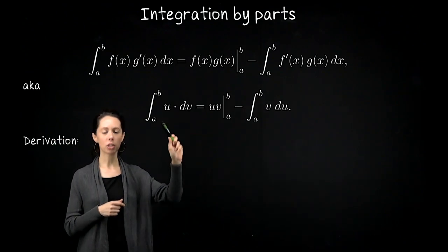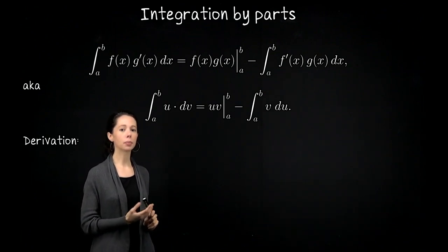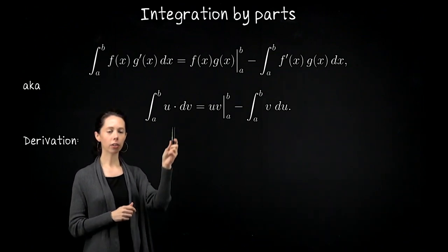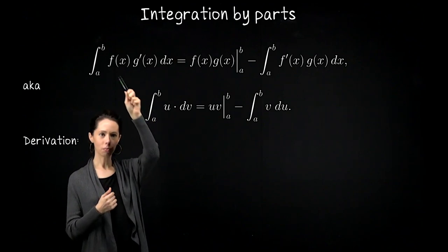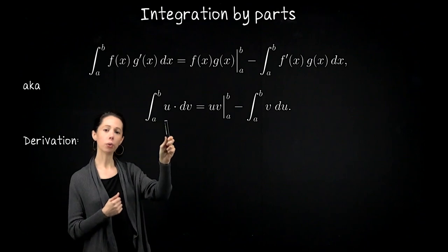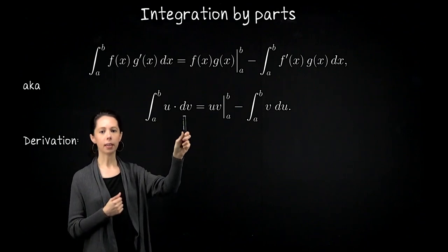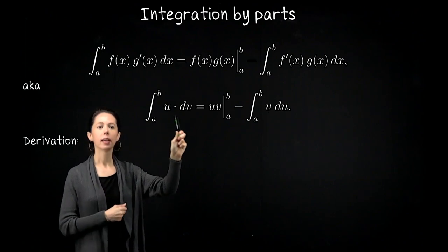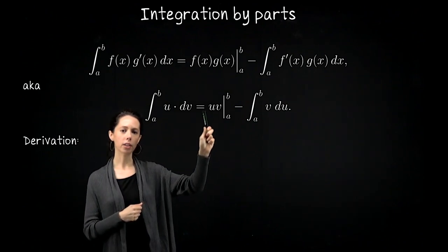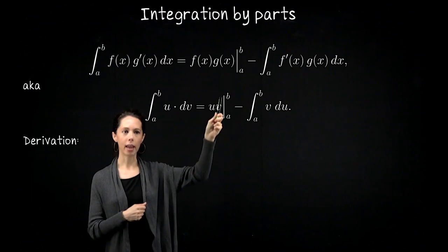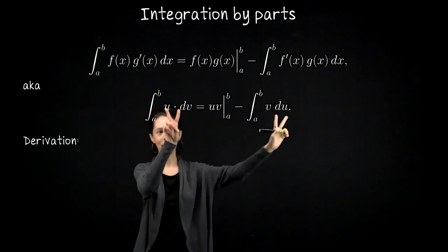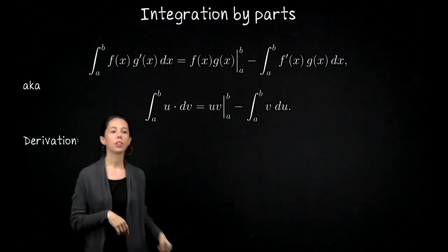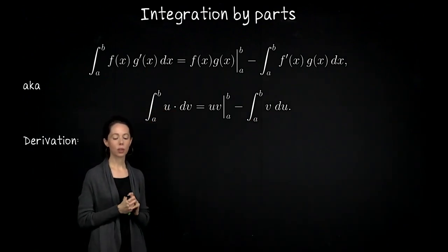Let me quickly mention the notation I like better when actually working out problems. I'll look at an integral and identify one of the product terms — what I would have called f of x — and call that u. The rest I'll call dv. u is what I'll differentiate; dv is what I'll anti-differentiate. The right-hand side is then u times v evaluated at a and b, minus the integral from a to b of v du. You can see that the roles of u and v are reversed on both sides.